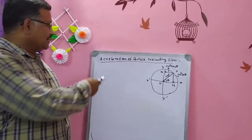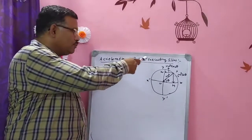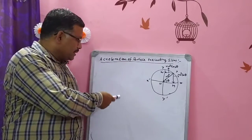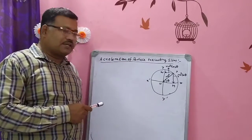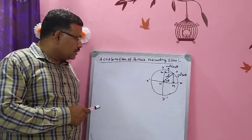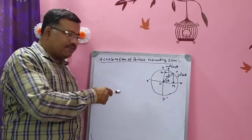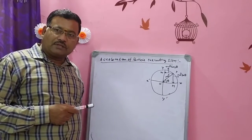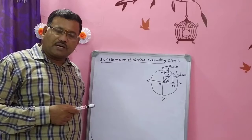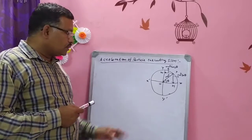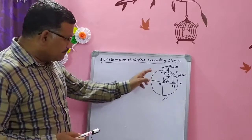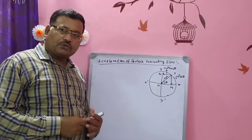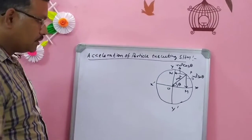Today's topic is acceleration of the particle executing SHM. This is a very simple expression and we can easily derive it. Afterwards, we will also derive expressions for time period and frequency. In the same diagram, I have done a little bit of changes to help understand better.